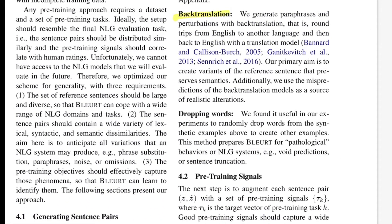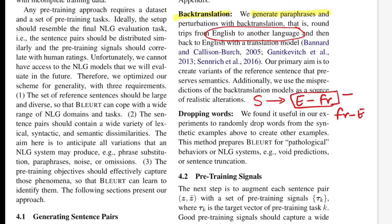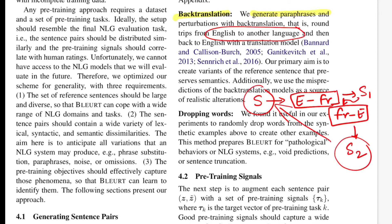The second perturbation is back translation, which generates a paraphrased version of the same sentence. For English and French, you pass sentence S through an English-to-French model to get S1, then pass S1 through a French-to-English model to get S2. S2 becomes the paraphrased representation of S, and this is the second scheme by which they generate sample pairs.